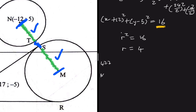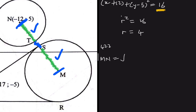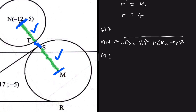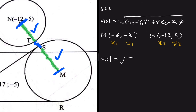Using the distance formula, MN = √[(y₂−y₁)² + (x₂−x₁)²]. The coordinates of M are (−6, −3) and the coordinates of N are (−12, 5). Taking M as (x₁, y₁) and N as (x₂, y₂): y₂ − y₁ = 5 − (−3) = 8, and x₂ − x₁ = −12 − (−6) = −6.